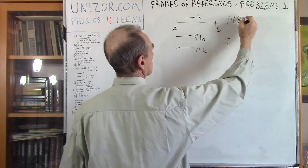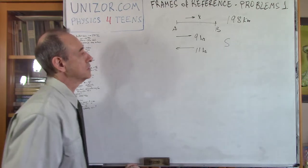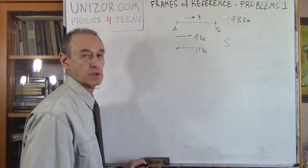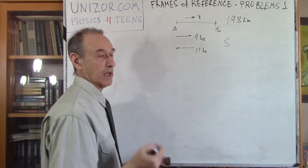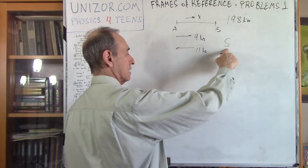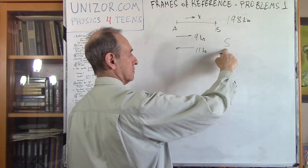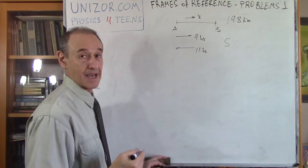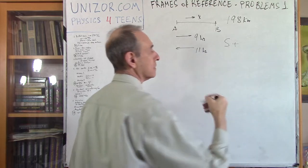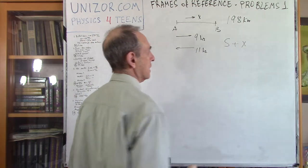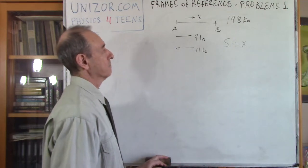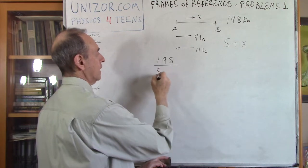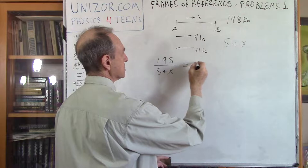The distance from A to B is 198 kilometers. If the boat's speed in standing water is s, then going downstream the flow helps: every hour the boat covers s from its engine plus x from the river current, giving a combined speed of s plus x kilometers per hour. So 198 divided by (s plus x) equals 9 hours.